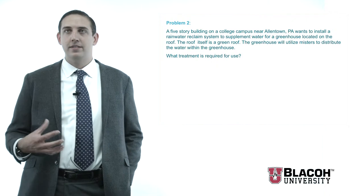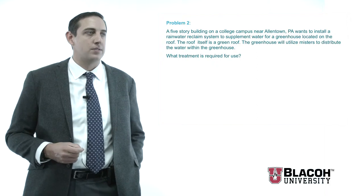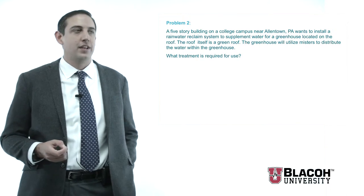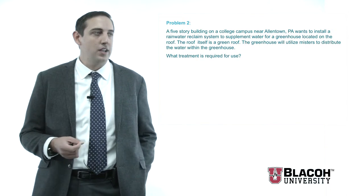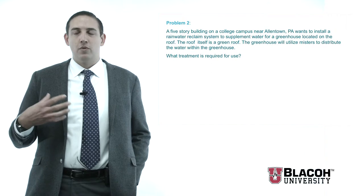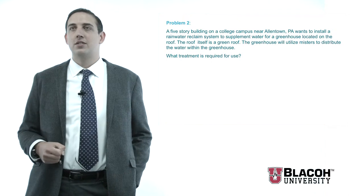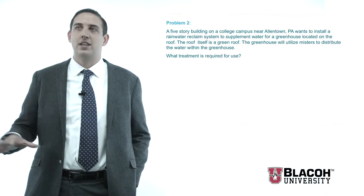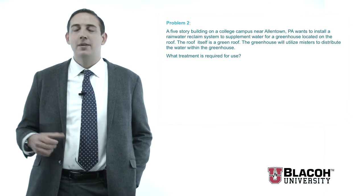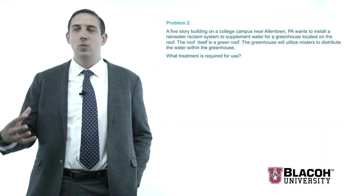Moving up in difficulty: a five-story building on a college campus near Allentown, PA wants to install a rainwater reclaim system to supplement water for a greenhouse located on the roof. The roof itself is a green roof, and the greenhouse will utilize misters to distribute the water. We're in Pennsylvania, the mid-Atlantic/northeastern region, so we are going to see some acid rain. Allentown is an old steel milling town, though there's not a lot of industry there today, so you won't see much industrial impact — but you will see some acid rain.